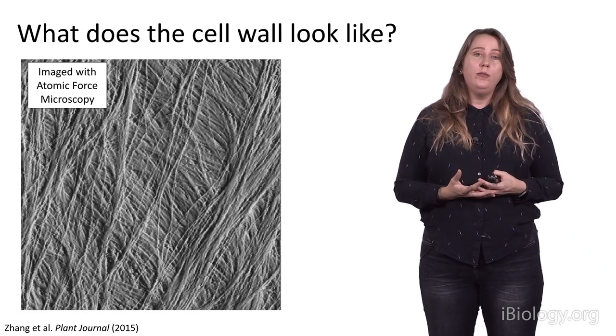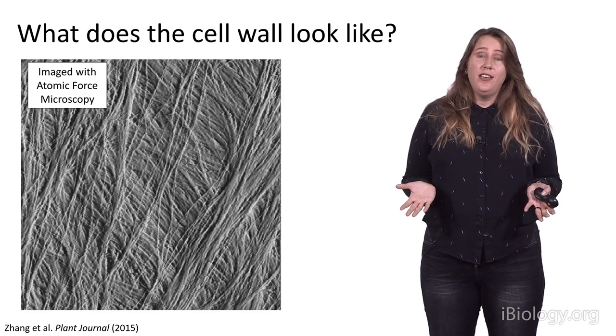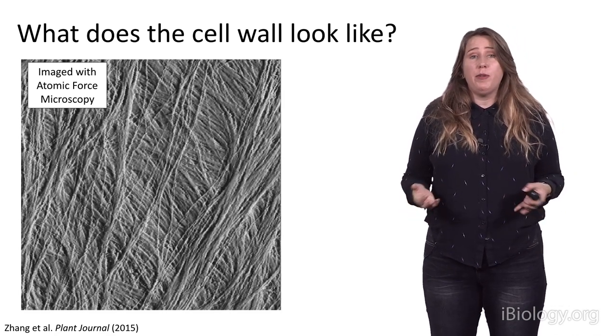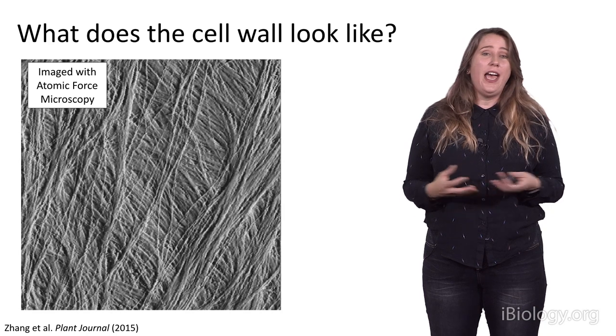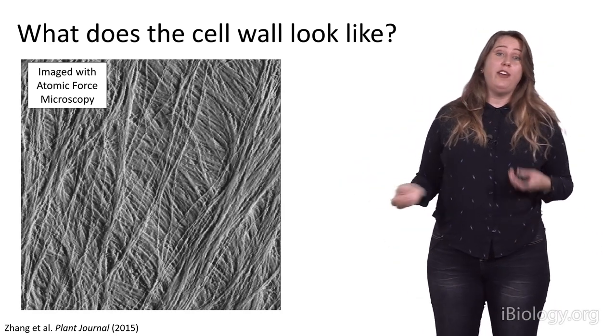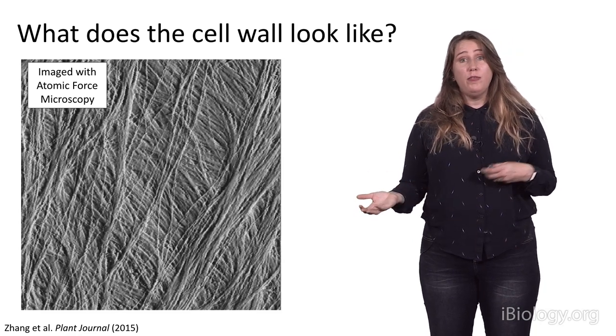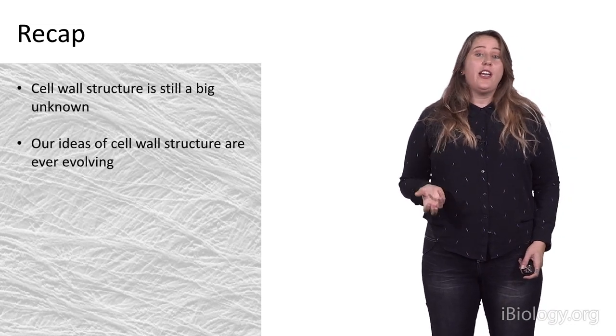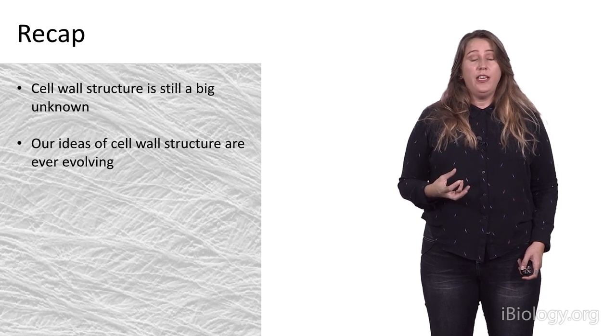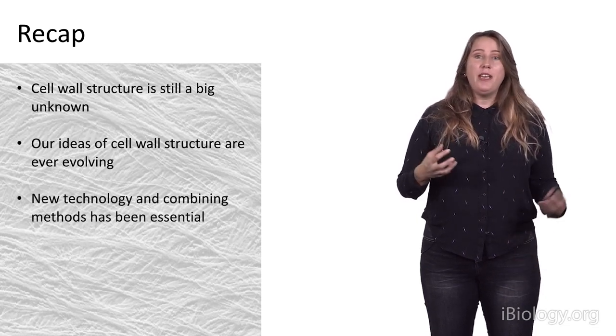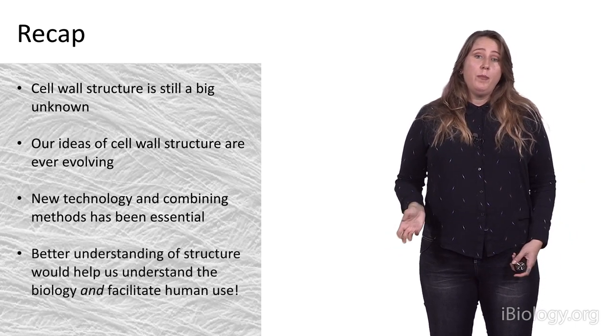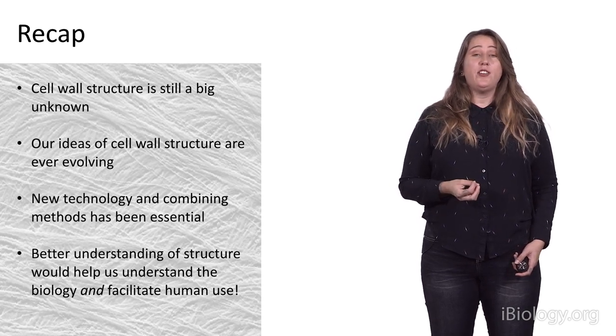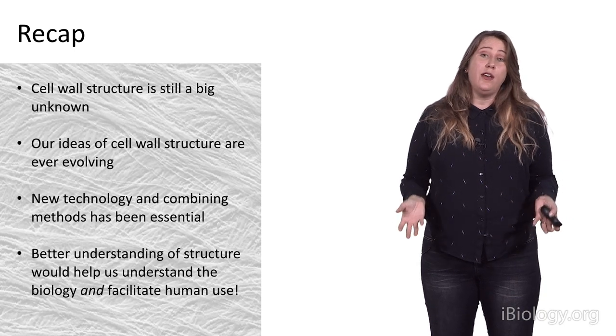We know what's in the cell wall in some of our model species, but not all plants. And we also have an idea of what the structure might look like, but we're still really just making headway more recently, with some of our advanced technologies, of knowing what it might actually look like. And knowing what it looks like in one species could be very different from what it looks like in another, one time from another as well. So, if we recap about the structure of the cell wall, it's still a big unknown, and our ideas of cell wall structure are ever-evolving. And that's due to new technology and combinations of methods from different disciplines that have been essential in allowing us to learn what we know so far. But a better understanding of the structure of the cell wall would really help us to understand the biology and also facilitate our use of cell wall materials.